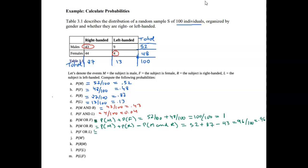For female or left-handed, there is also overlap — 4 people are in both groups. So we compute: probability of female plus probability of left-handed minus probability of female and left-handed. That's 48 plus 13 minus 4, all over 100. This gives 57 out of 100, or 0.57.